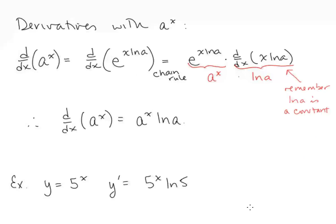Now let's look at derivatives with a to the x. The derivative of a to the x is, by definition, the derivative of e to the x ln a. We use the chain rule: that gives us e to the x ln a multiplied by the derivative of x ln a. Since ln a is a constant, the derivative of x ln a with respect to x is just ln a. So the derivative of a to the x is a to the x ln a.